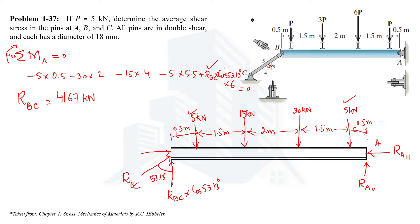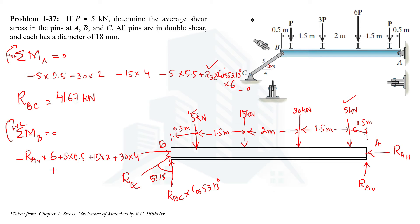Similarly, we can find other support reactions using equilibrium. Taking moments about point B: RAH passes through B and produces no moment. RAB produces an anticlockwise moment of RAB × 6. The clockwise moments are: 5 kN with arm 5.5, 15 kN with arm 2, 30 kN with arm 4, and 5 kN with arm 5.5. Solving this equation with RAB as the only unknown gives RAB = 30 kN.